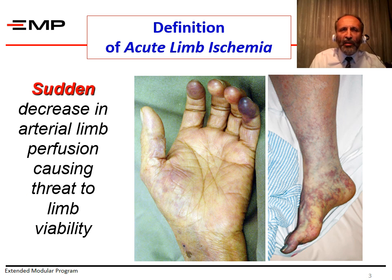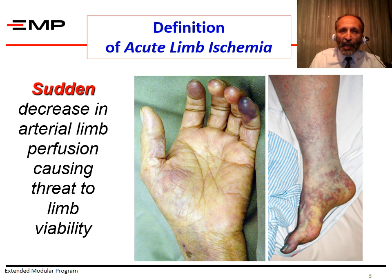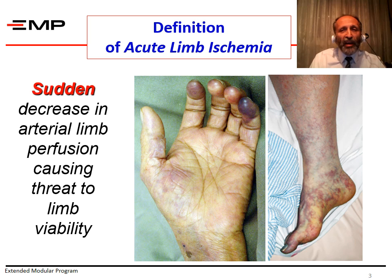By definition, acute ischemia is a sudden decrease in arterial limb perfusion causing threat to limb viability. The word 'sudden' is important because in chronic ischemia, the occlusion is gradual. The picture shows a foot and a hand with acute ischemia. You can easily notice the characteristic colour — the blue colour, the mottling — and you can also expect that the limbs are cold.